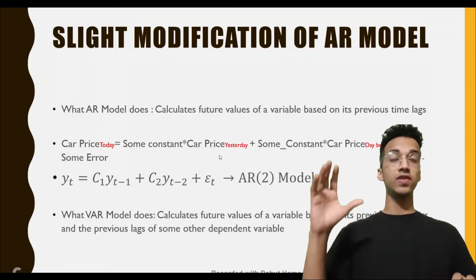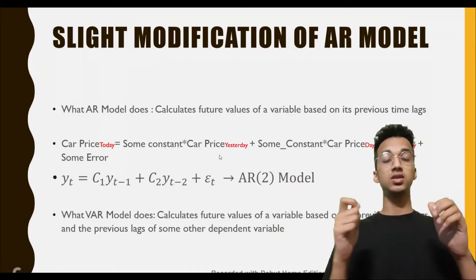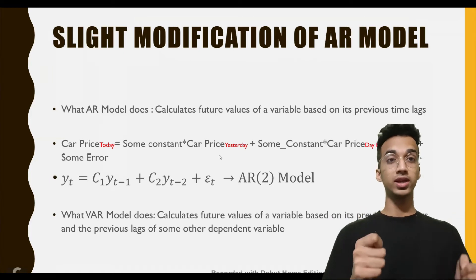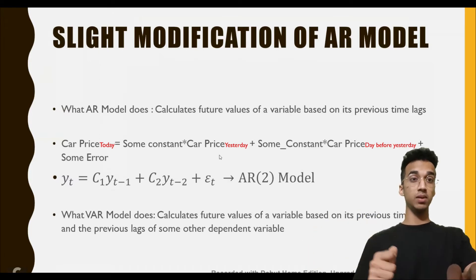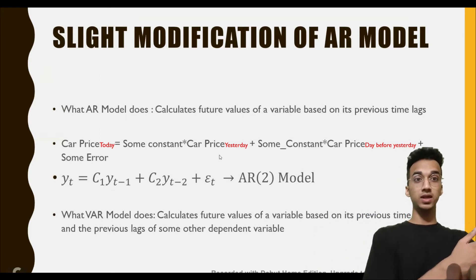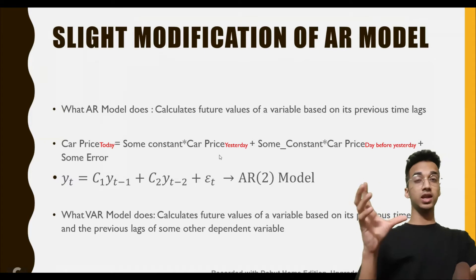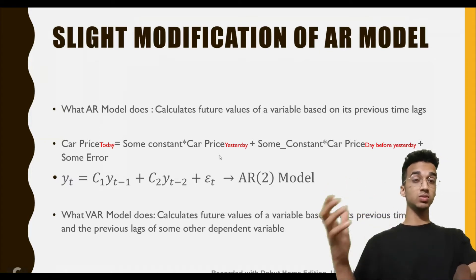Vector autoregression is just a slight modification of the autoregression model. The autoregression model calculates the future values of a variable based on its previous time lags. I've written an equation in words because it's much more easier to understand.